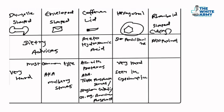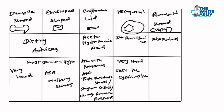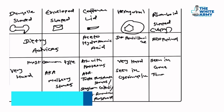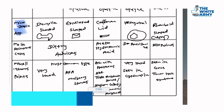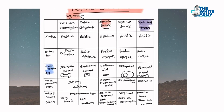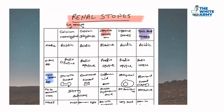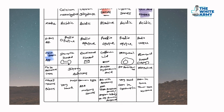Uric acid stones are mostly seen where uric acid is high — conditions like gout, where uric acid is elevated, and tumor lysis syndrome, where tumor lysis releases uric acid. This covers all about renal stones — you can expect one or two questions from this table. Thank you.